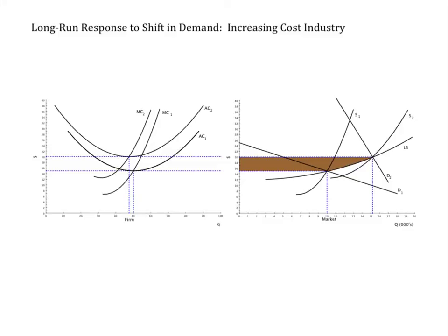Here's another example of a rising long-run supply curve: the increasing cost industry. Suppose the demand for inputs — say, labor services — by this industry is large relative to the input market. Expansion by this industry in response to a shift out in demand would lead to a shift out in the demand for labor, raising wages and causing average cost and marginal costs to shift up, causing the market price to rise and generating an increase in producer surplus as represented by the brown area. Ultimately, that economic rent is generated by the higher wages going to workers who had been willing to work for less at the old market conditions.